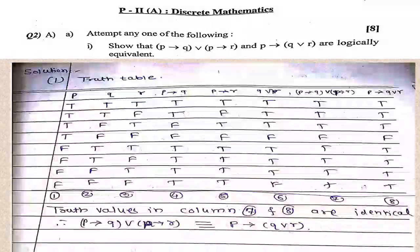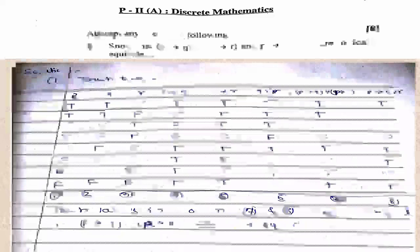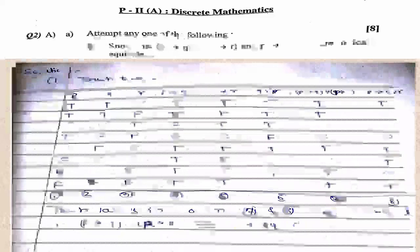Question 2A is on discrete mathematics. Attempt any one of the following: show that (p → q) ∨ (p → r) and p → (q ∨ r) are logically equivalent. For this we prepare a truth table for columns (p → q) ∨ (p → r) and p → (q ∨ r). In columns 7 and 8 the truth values are identical, and hence both statements are equivalent.